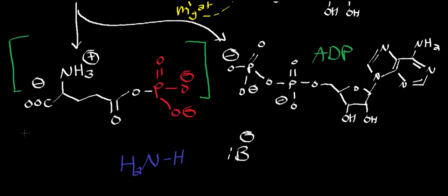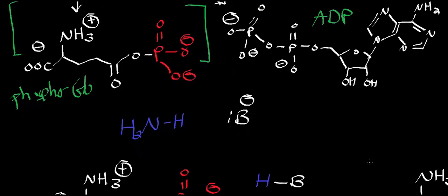Ultimately what you get is this intermediate right here. It's called phosphoglutamate, a phosphoglutamate intermediate, and it's going to quickly be consumed by the last half of the enzymatic mechanism.